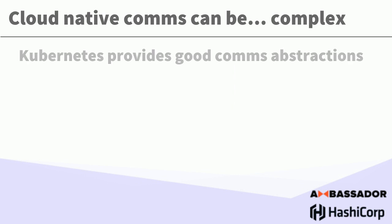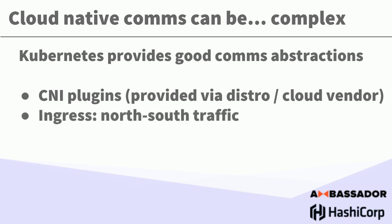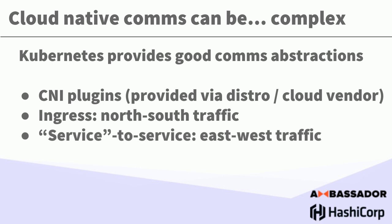As I mentioned up front, cloud-native comms can be complex. The good news when you're adopting Kubernetes is it provides good abstractions — things like the Container Network Interface, the CNI plugins. This is typically provided by your cloud, or you may be using something like Calico or Cilium. Ingress is where Ambassador plays — getting traffic into your cluster. We call this north-south traffic: traffic coming in from users, meeting the edge of your data center, going through to your back-end services. Kubernetes also introduces the concept of a service for service-to-service communications — east-west traffic, very much where the service mesh plays.